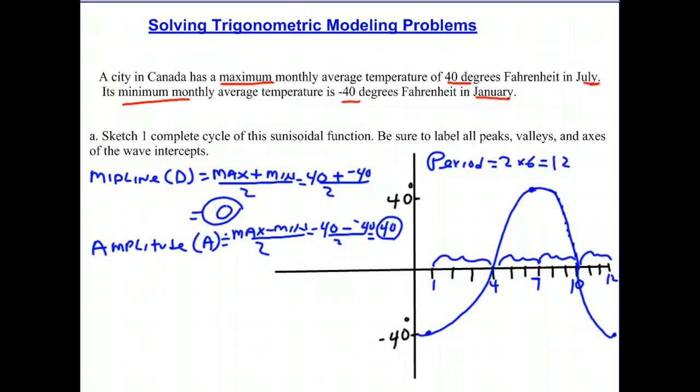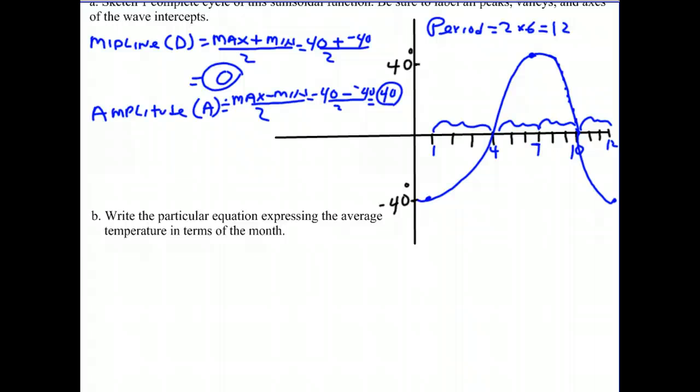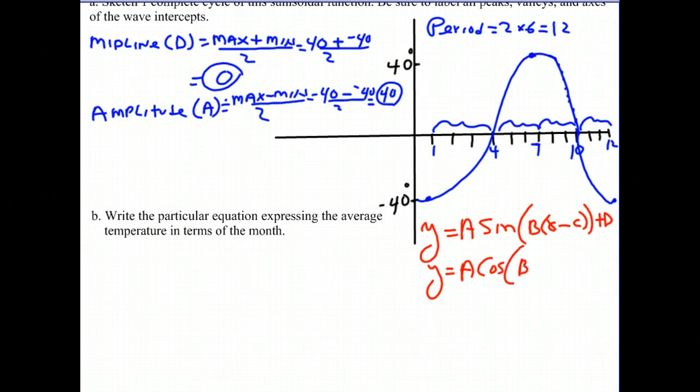Now let's write the particular equation expressing the average temperature in terms of the month. The general form of these sinusoidal functions are Y equals A sine of B times X minus C plus D, or it could be A cosine of B times X minus C plus D.